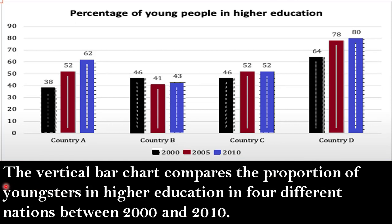Let's begin the introduction. The vertical bar chart compares the proportion of young people in higher education in four different nations between 2000 and 2010.